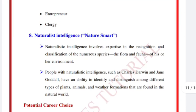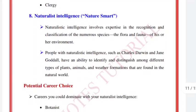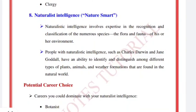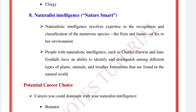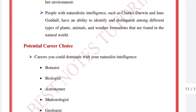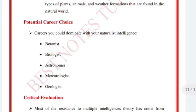Naturalist intelligence involves expertise in the recognition and classification of numerous species of flora and fauna in one's environment. People with naturalist intelligence are highly attuned to the natural world. Career choices include botanists, biologists, astronomers, meteorologists, and geologists.